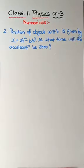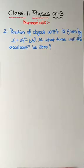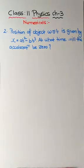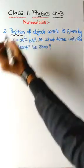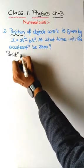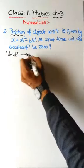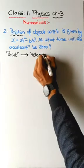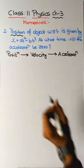The second question: position of an object varies with time t given by x = at² - bt³. At what time will the acceleration be zero? Here a and b are constants, so the answer will be in terms of a and b. Since we're given position and need acceleration, we cannot go directly — we must first differentiate position to get velocity, then differentiate velocity to get acceleration.